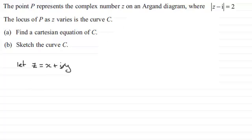So if we do that, we'll just substitute this into this equation here. We therefore have the modulus of x plus iy minus i, and just complete the mod there, equals 2.